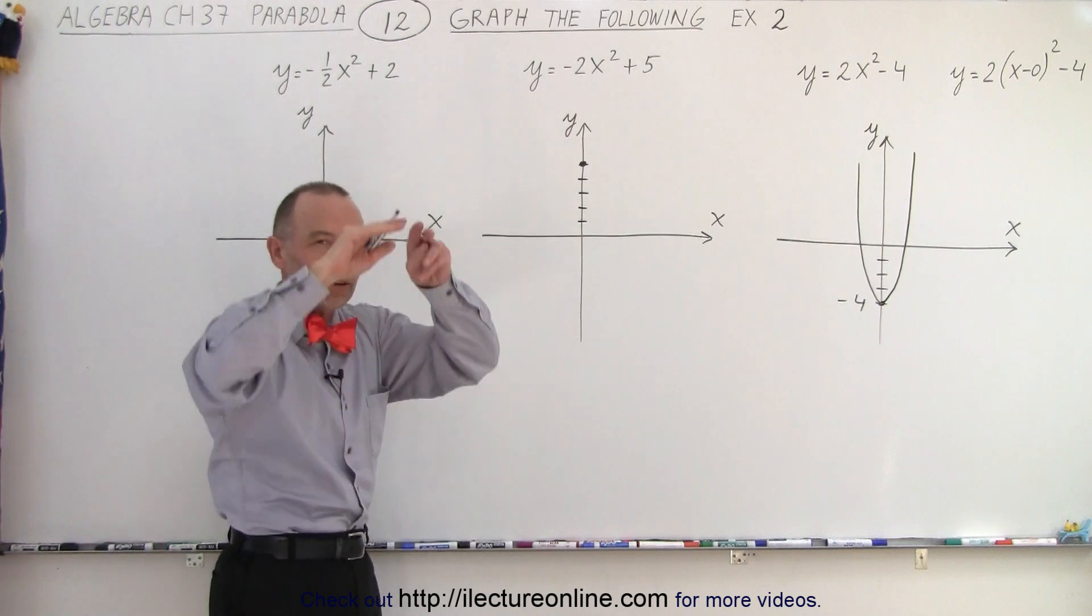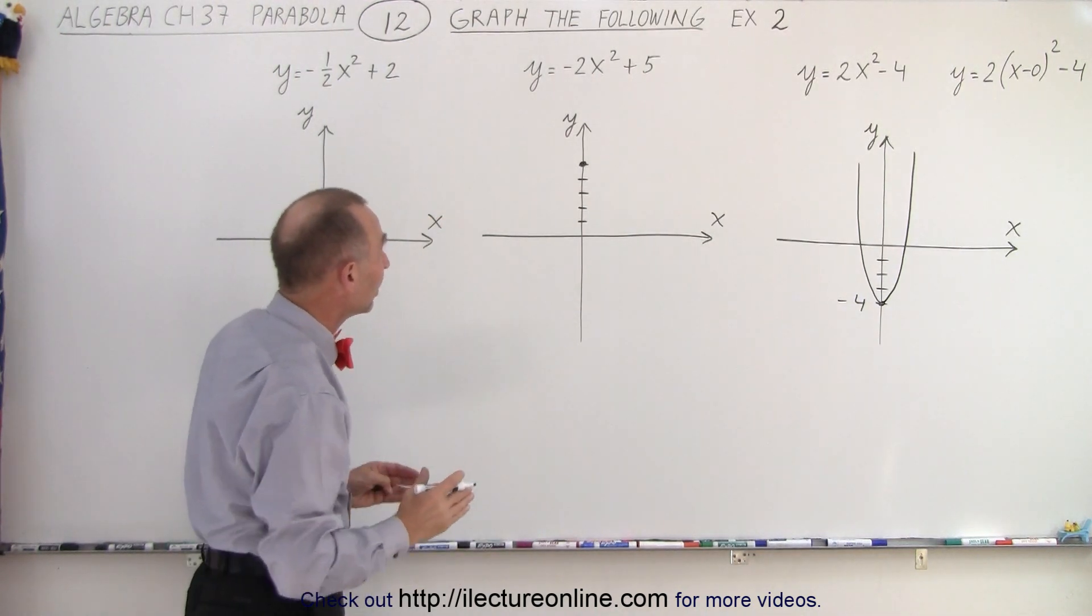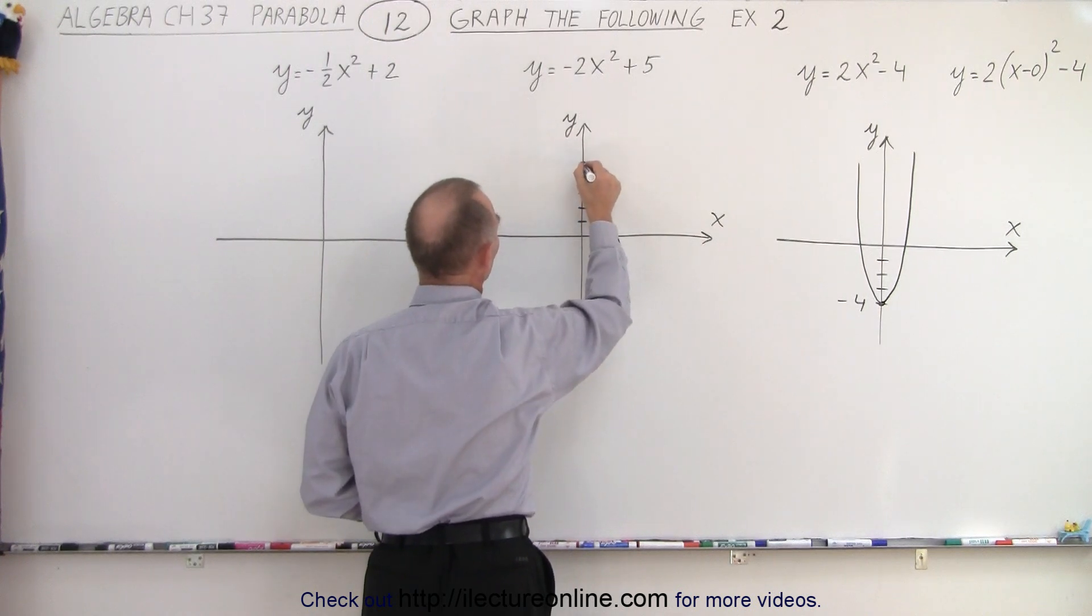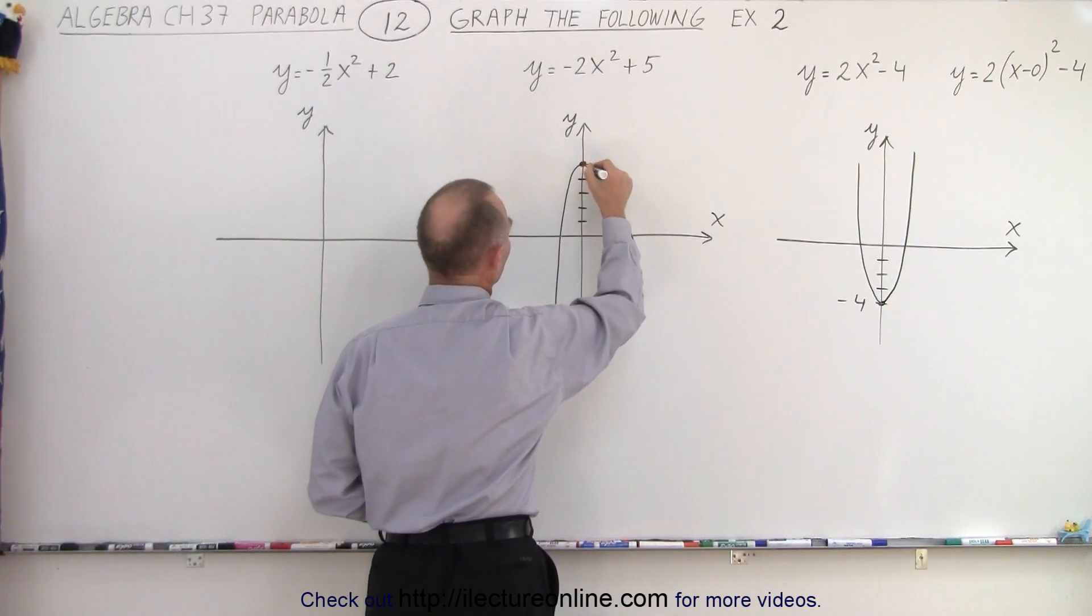And since there's a negative sign in front that means the parabola will be opening downward. The 2 means that it will grow twice as fast so it will be skinny. So the parabola will look kind of like this.